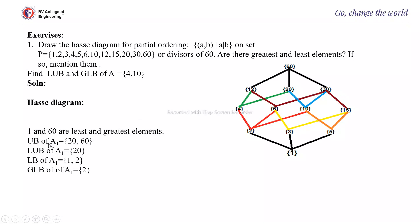Next is upper bound of A₁. So 4 and 10. So 4 is here, 10 is here. Here from both 4 and 10, 20 is the upper bound. And after 20, 60 is the upper bound. So 20 and 60 are the upper bound. 20 is the least upper bound.